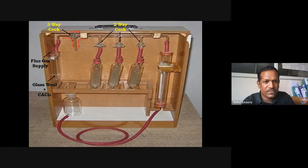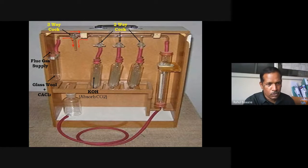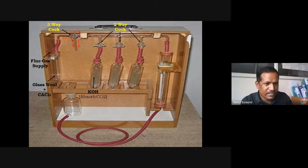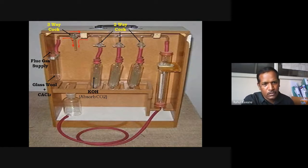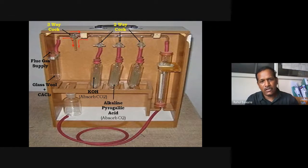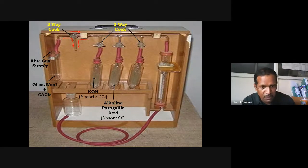The glass bulbs are not empty. Each glass bulb contains a different solution. The first glass bulb contains KOH solution. KOH has the tendency to absorb CO₂ gas. So if the exhaust flue gas has CO₂ content and passes through this first glass bulb, the KOH solution will absorb that CO₂.